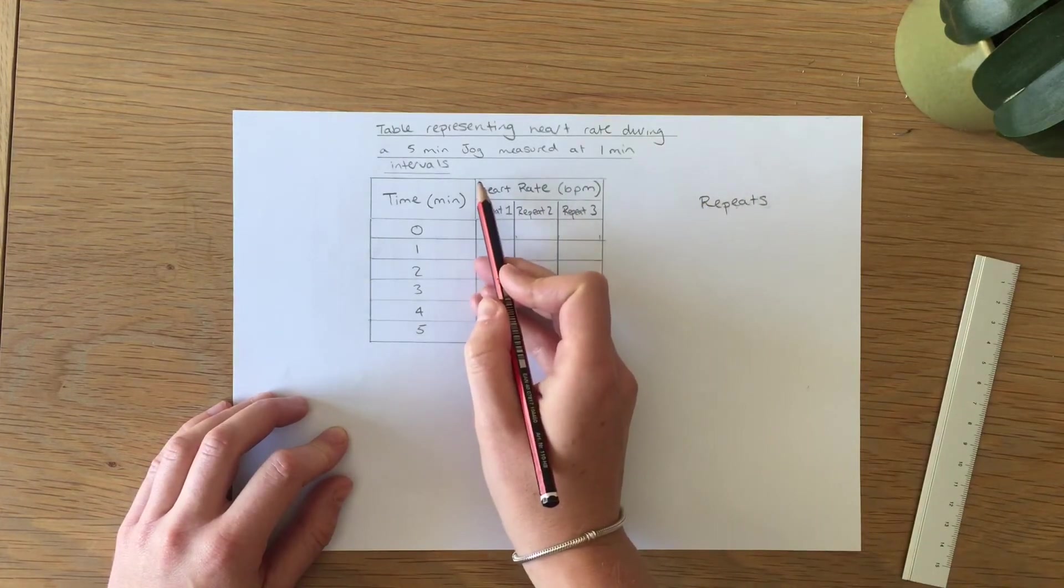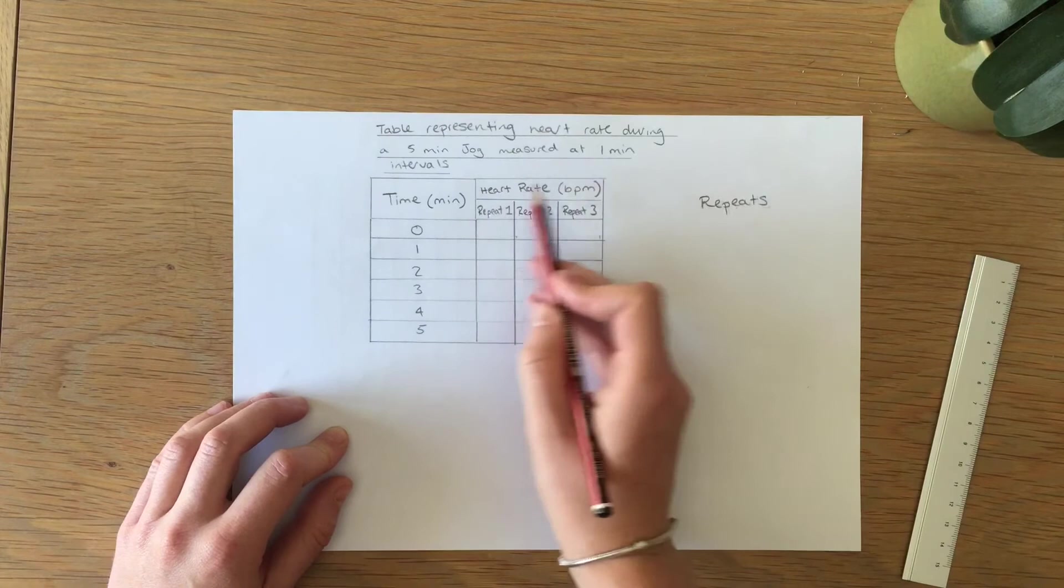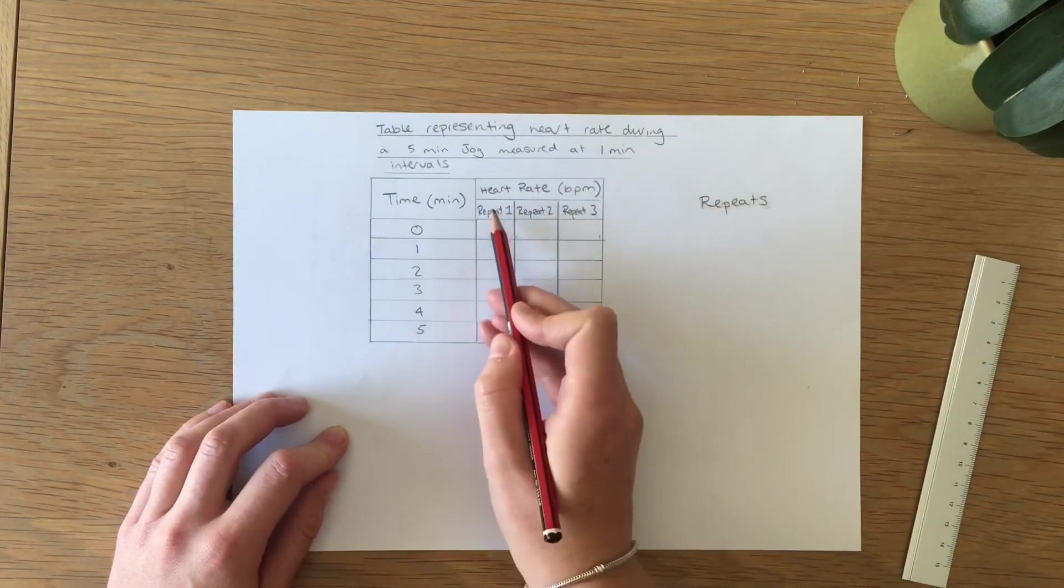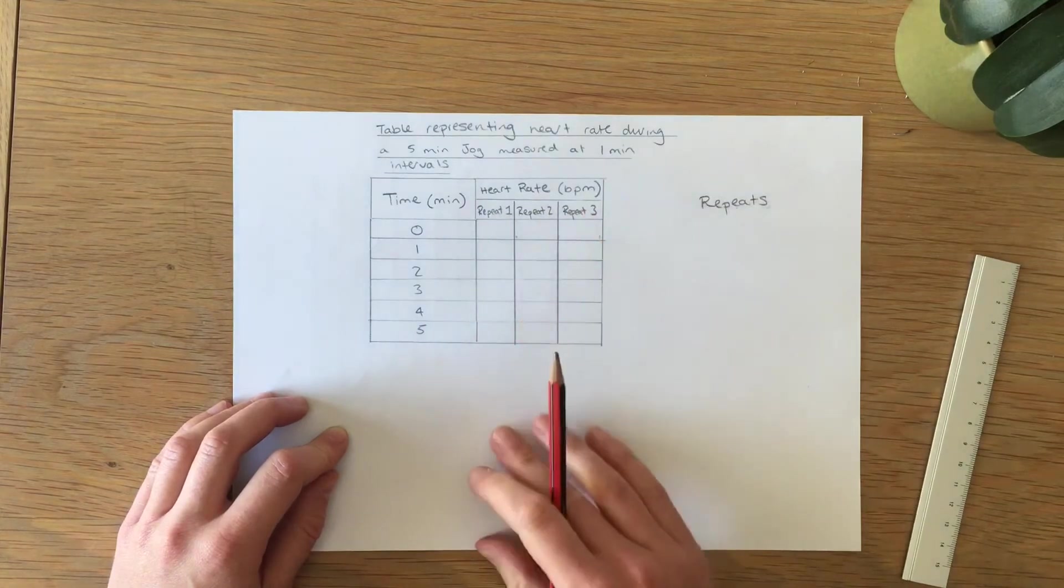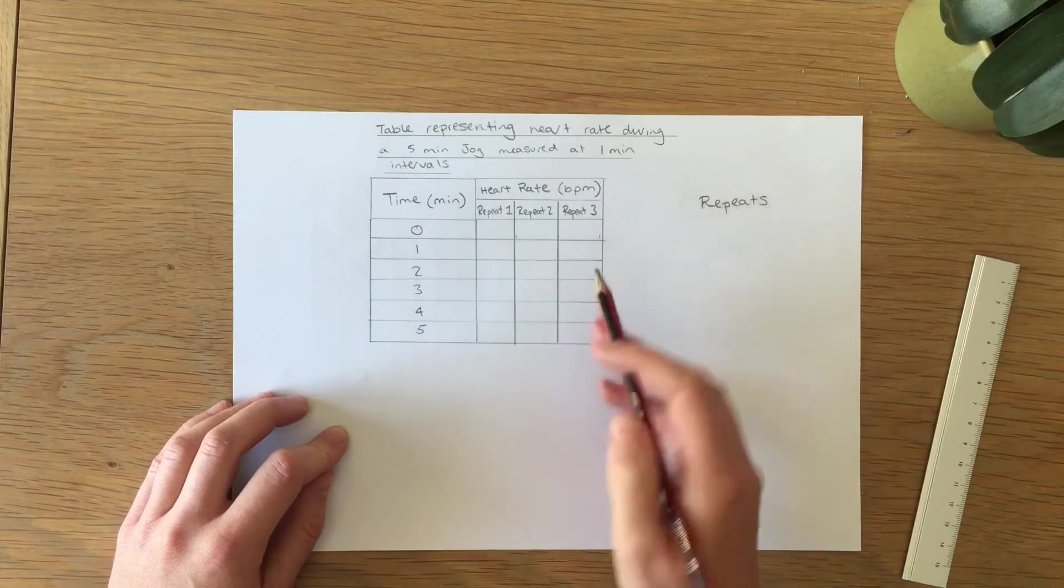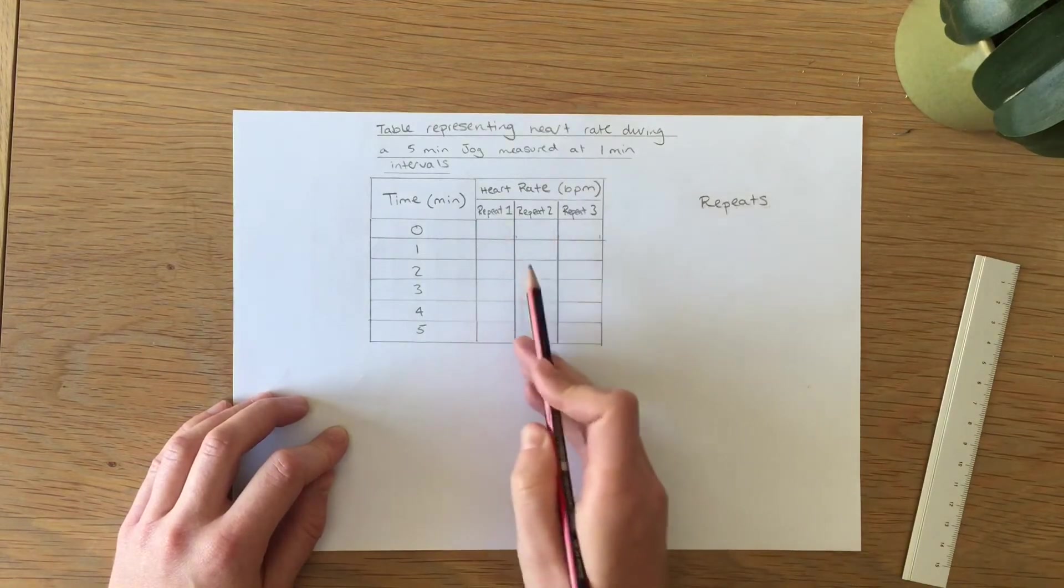Note that the very top row of your dependent variable columns is all merged and then it's split into your repeat columns in that second row and then you will have to fill in all your data.